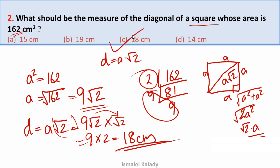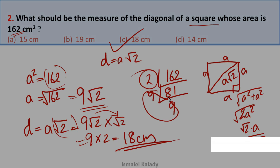So this area gives us the side. It is substituted in the diagonal equation. It is not a confusing thing — it is not a perfect root, so we take the root and simplification. It is applied in the diagonal equation. The right answer is 18 centimeters.